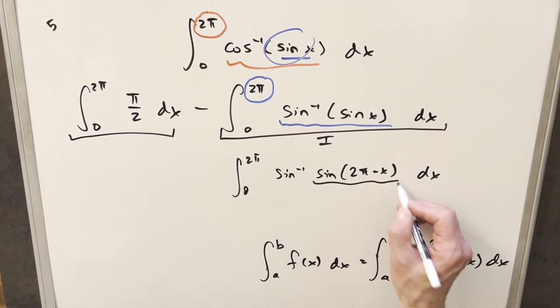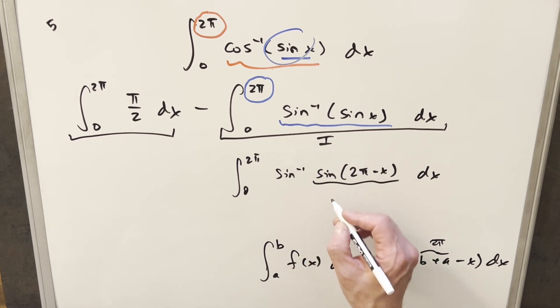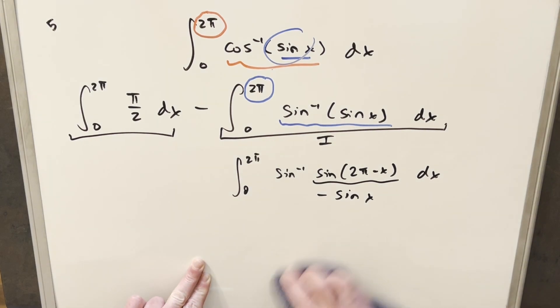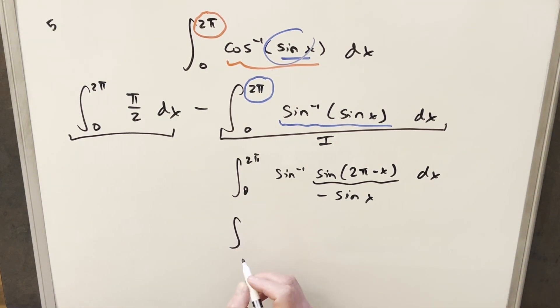But then we can rewrite this right here. Because this right here is we've got sine shifted by two pi, but we have it reversed. This is actually going to be minus sin(x). But now this isn't too bad. Let me just rewrite this really quick. So what we end up with here, again, this is still our i value. So we're going from zero to two pi and we have arcsine. And this is now going to become minus sin(x).